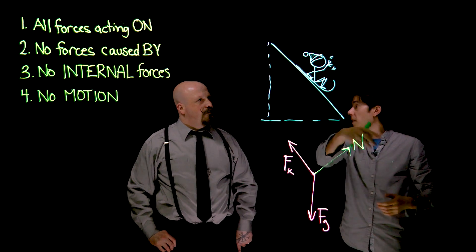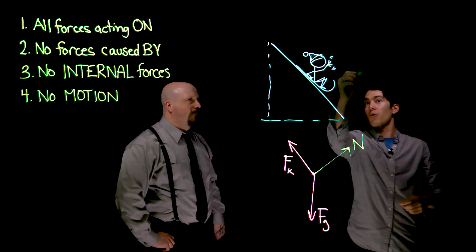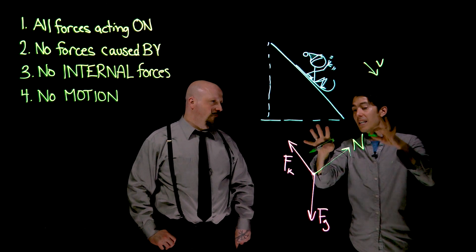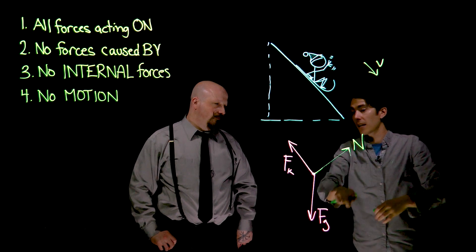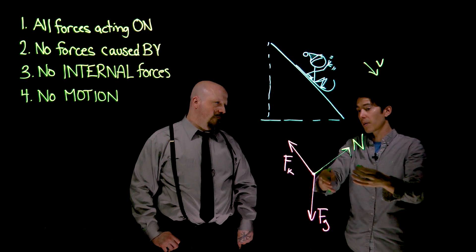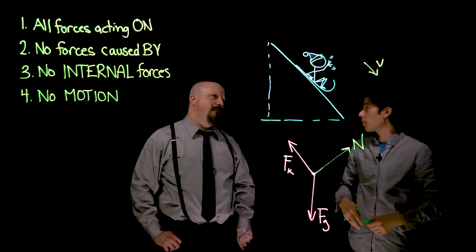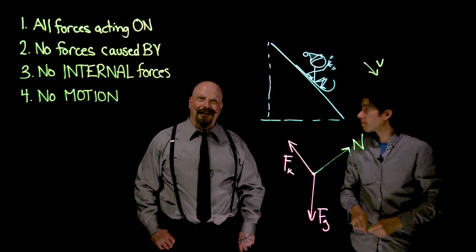We talked about whether the sled's moving downwards or not. We can describe that with a velocity or maybe an acceleration vector. We just need to make sure that that vector doesn't make it in here. Because we're going to be using this diagram to look at forces that cancel out or add together. An extraneous, another vector there might just mess up the math.